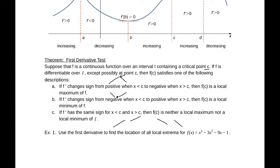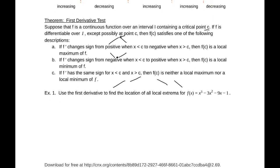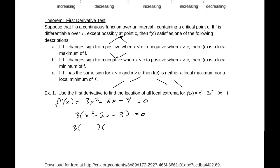Let's look at an example. Use the first derivative to find the location of all local extrema for f(x) = x³ - 3x² - 9x - 1. Taking the first derivative, we get f'(x) = 3x² - 6x - 9. Setting this equal to 0 and factoring, we take out a 3 to get x² - 2x - 3, which factors as (x - 3)(x + 1). So we have critical points at x = 3 and x = -1.